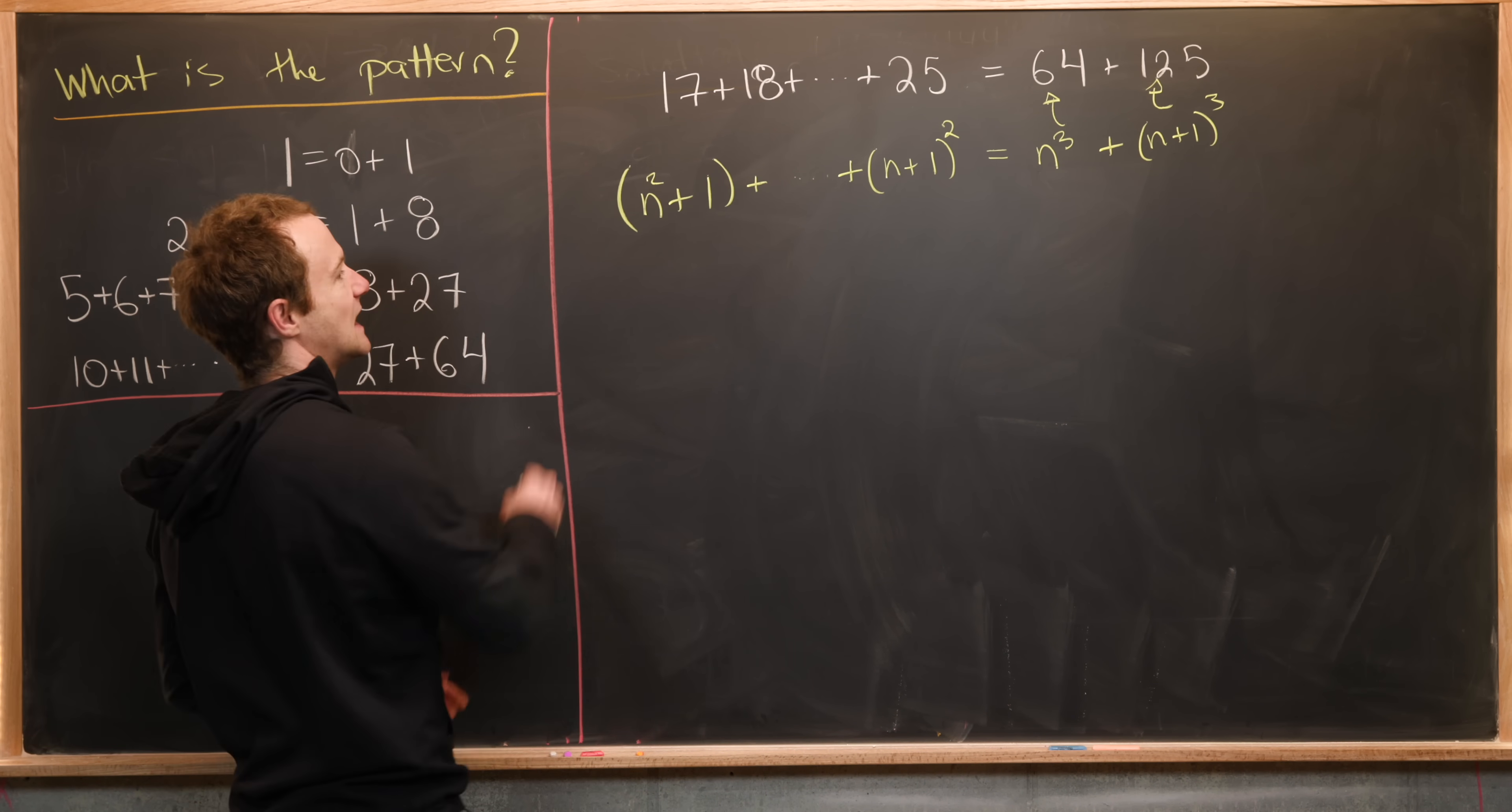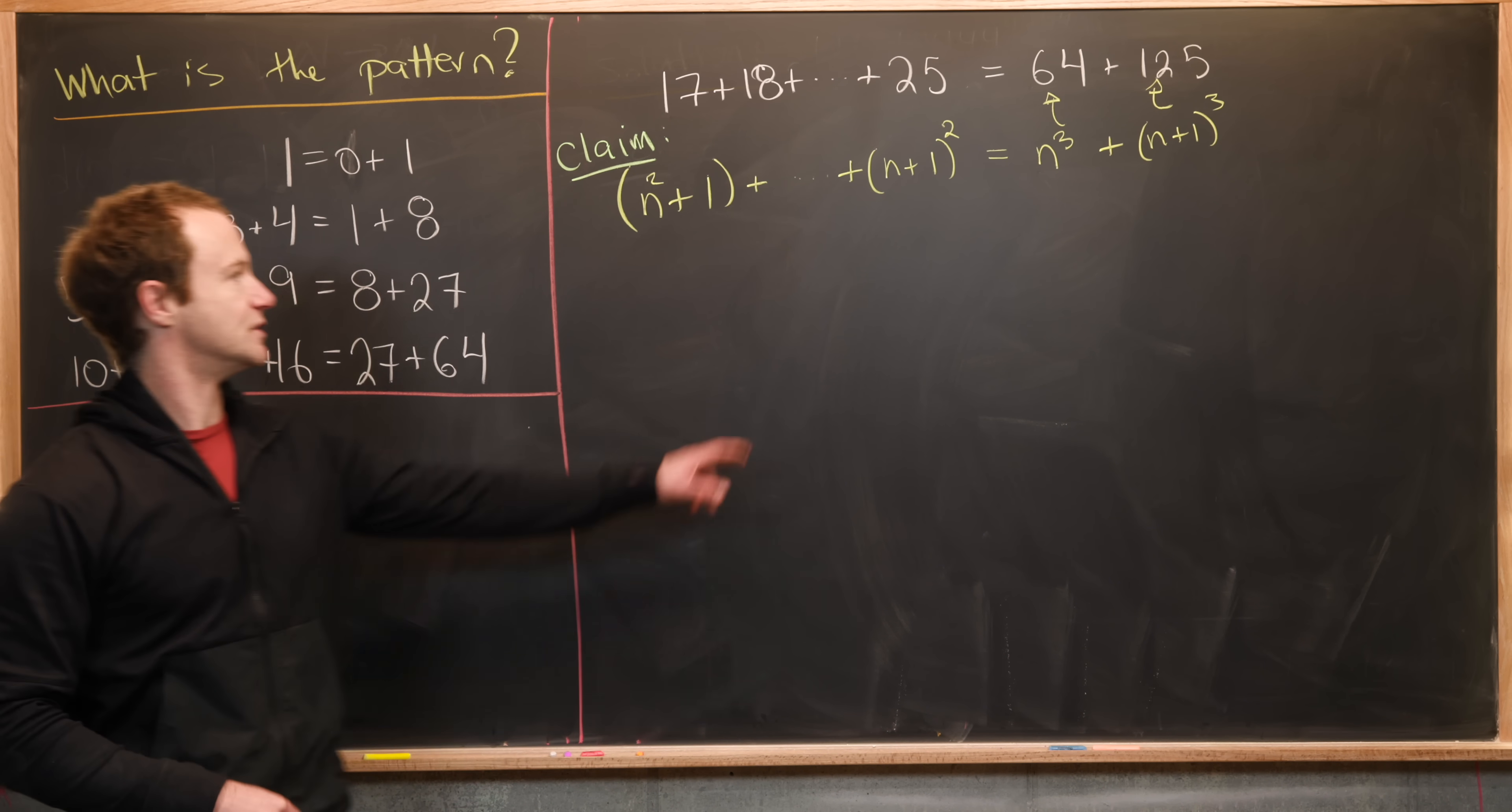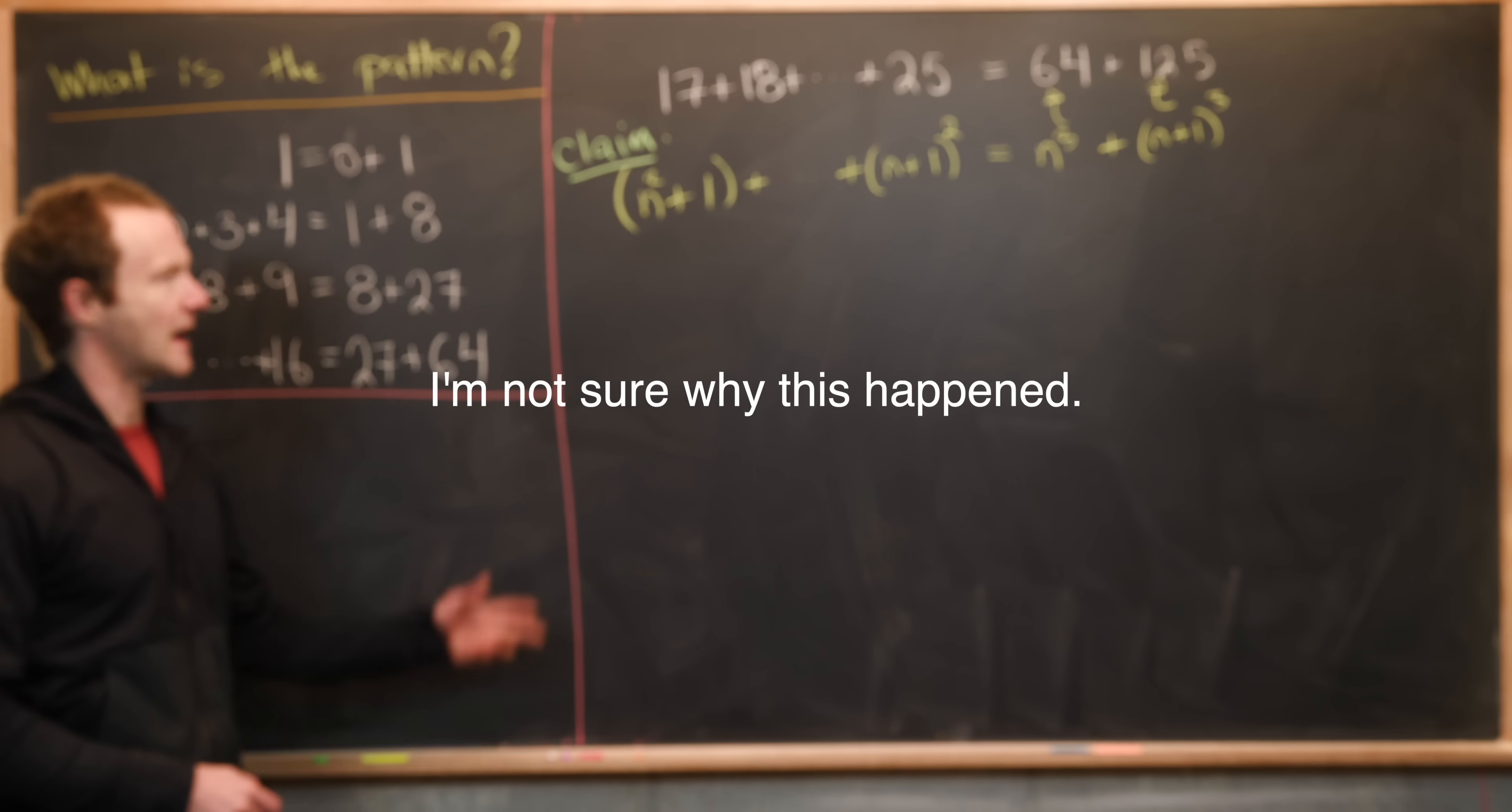So I think we have a claim built. And that claim is written here in yellow. So we have n squared plus 1 plus n squared plus 2 all the way up to n plus 1 quantity squared is equal to n cubed plus n plus 1 cubed. Okay.